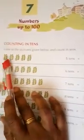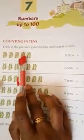Number up to 100. Look at the picture given below and count in 10s. 1, 2, 3, 4, 5. Five tens equal 50. FIFTY, 50.